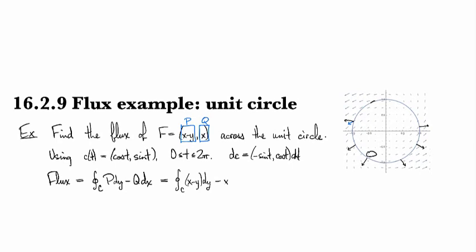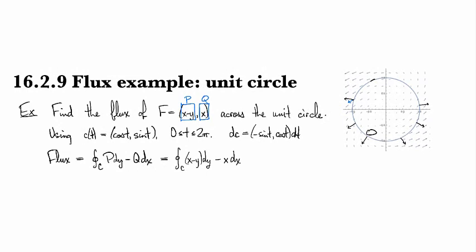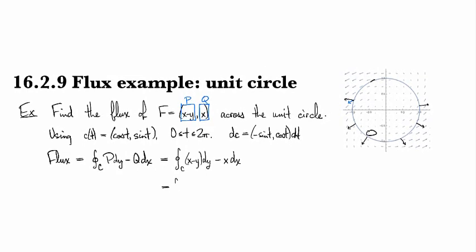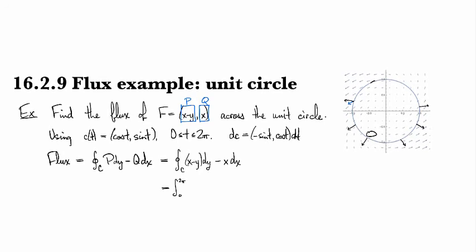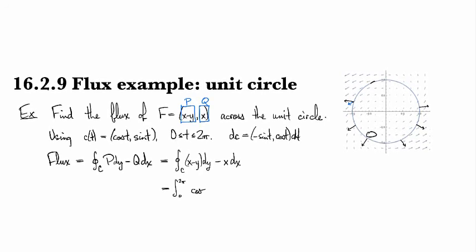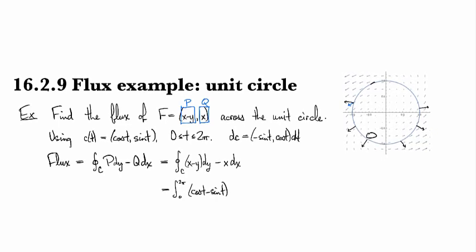And so now we can put in our parameterization, so we're going to be going from 0 to 2π. So x minus y, that's going to be cosine t minus sine t.